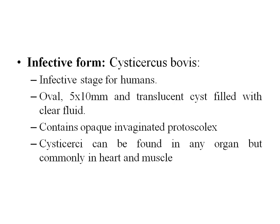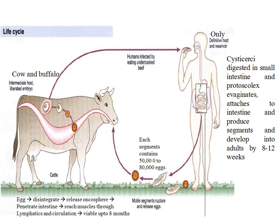Humans are infected by eating undercooked beef containing cysticercus bovis. The cyst is digested in the small intestine, the protoscolex evaginates, attaches to the intestine, and develops into an adult worm within 2–3 months. Each segment contains around 50,000–80,000 eggs. When released eggs are consumed by cows, the oncosphere is released in the intestine, penetrates to reach muscles via lymphatic and systemic circulation, and develops into cysticercus bovis. Cysticercus bovis remains viable for up to 8 months.